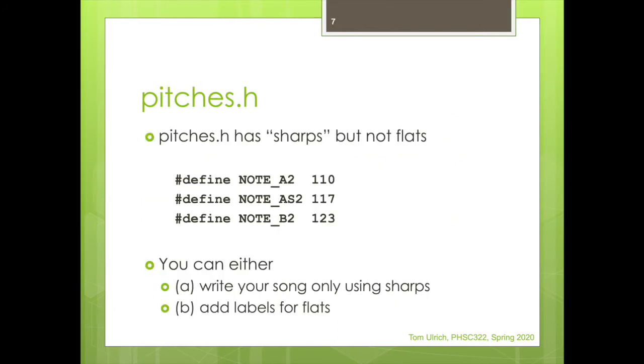Note also pitches.h does not have sharps. It has sharps. It doesn't have the flats. So you'll see A2 is A in the second octave. AS2 is A sharp in the second octave. And B2 is B in the second octave. So if you want to have a flat in there, you can write your song using only sharps because A sharp is the same as B flat. But you and I both know that that's not quite how music works. If you're thinking in flats, you want to keep thinking that. So you can either do it sharps or what you can do is add labels for flats.